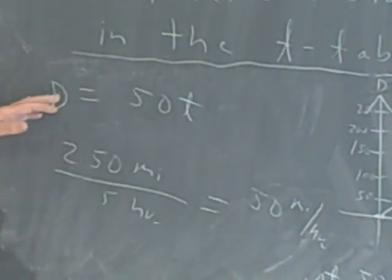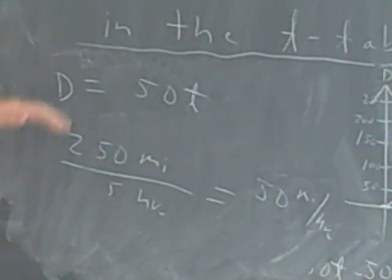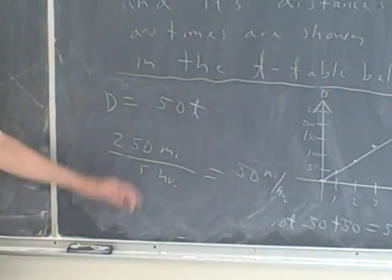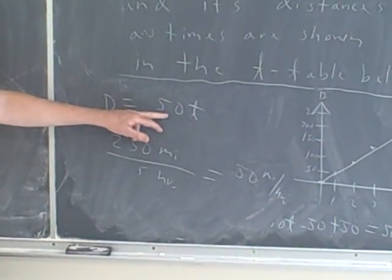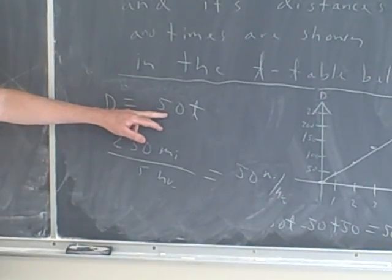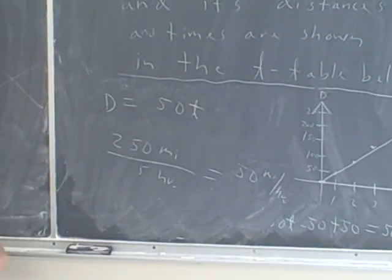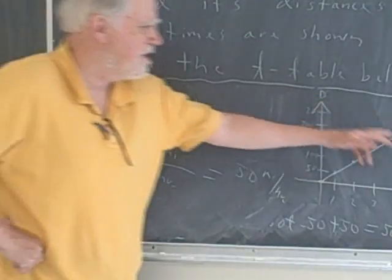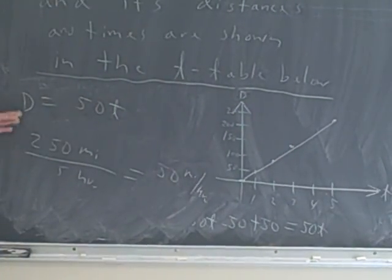Well, isn't that nice? Not only does our linear model tell us, you know, we can solve things like give me a time, I can tell you the distance. Give me the distance, I can tell you how long. But it also gives you the rate of change, and the rate of change is how fast the car is going. He's going 50 miles per hour because it's distance over time. And he's going at a steady rate of 50 miles an hour.